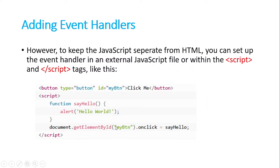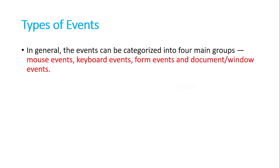So this is another way of adding event handlers — one was the easiest and this one is a bit more complex. There are many ways to add event handlers. As for types of events, we can generally categorize them into four main groups: mouse events, keyboard events, form events, and document or window events. Let's understand them one by one.